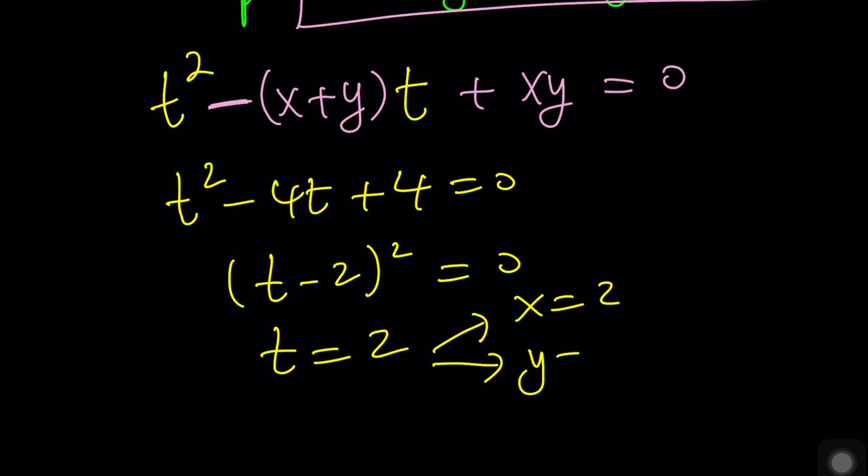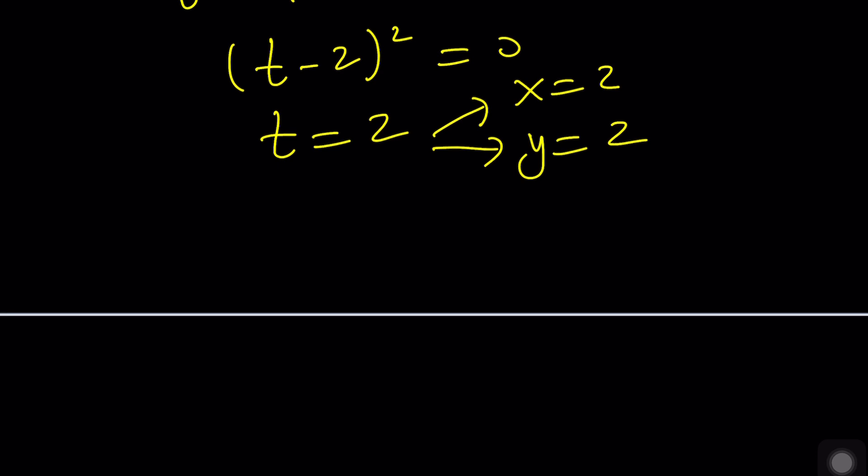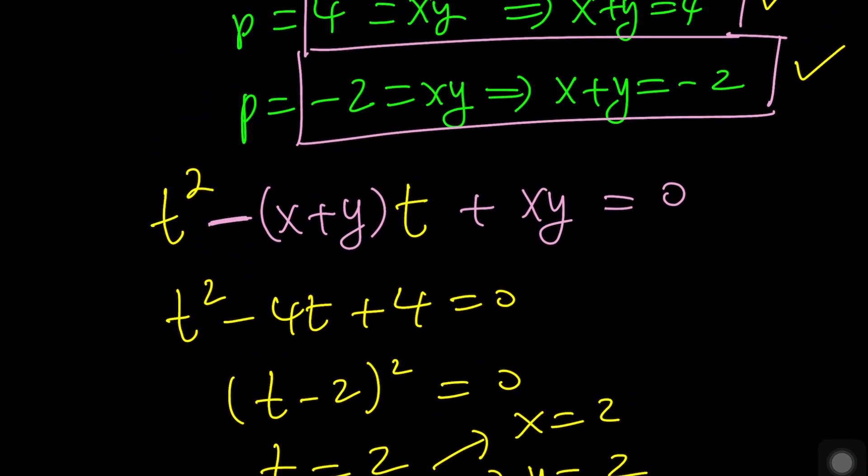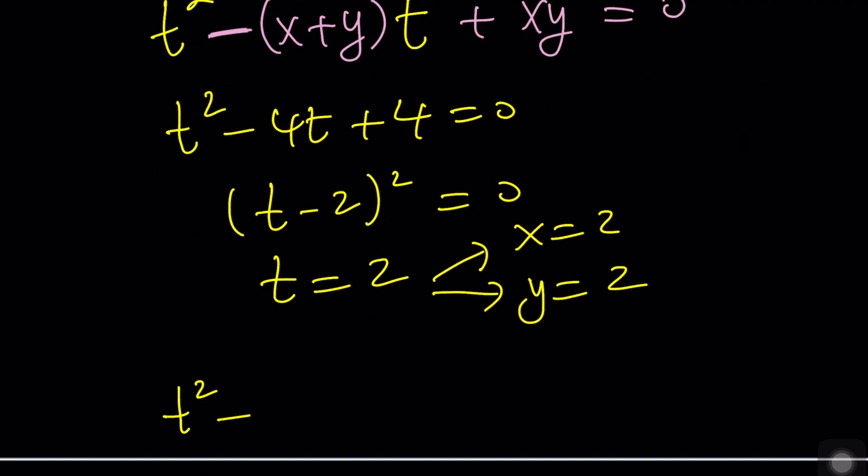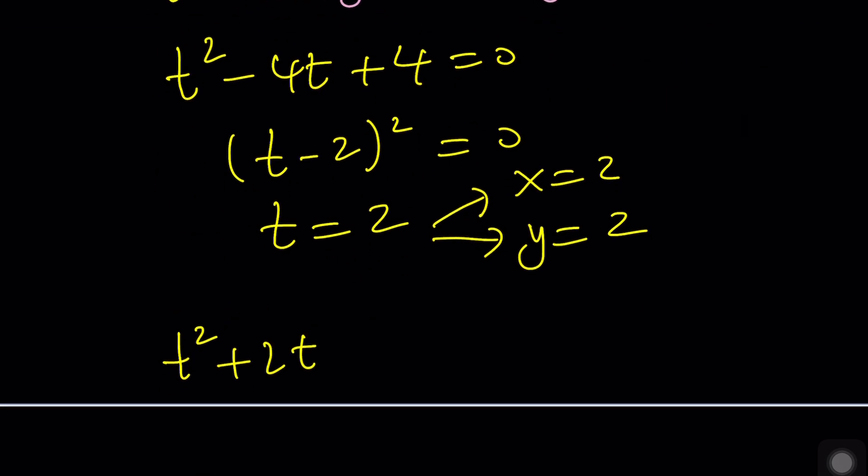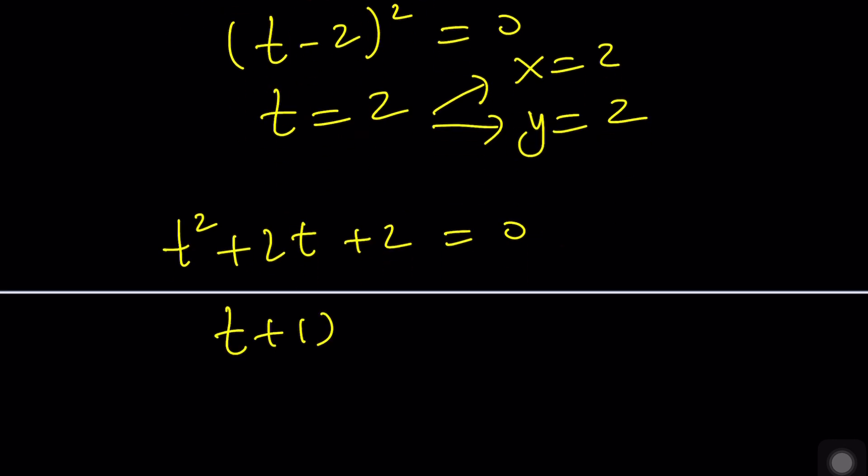Now, the second equation is going to be formed by T squared minus X plus Y is negative 2, so that's going to turn into a plus 2T plus 2 equals 0. Uh-oh. We don't get real solutions, but that's okay. We can write this as follows. And then from here, T plus 1 becomes plus minus I,